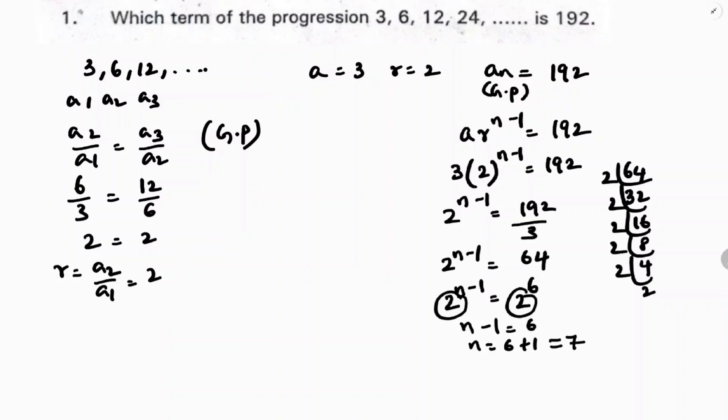Which term of the progression GP? The 7th term of GP is 192.